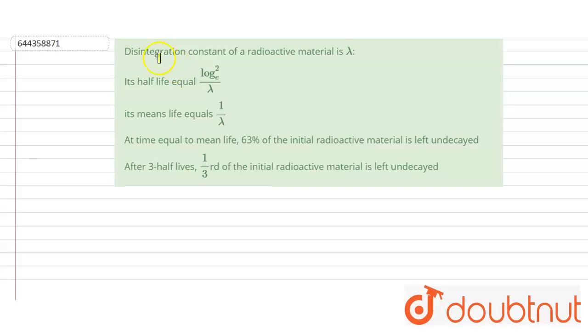Hello everyone, let's start the question. The question is: the disintegration constant of the radioactive material is lambda, and we have to find the correct options.